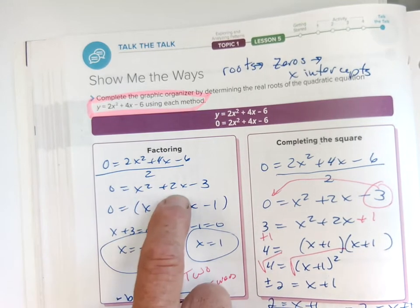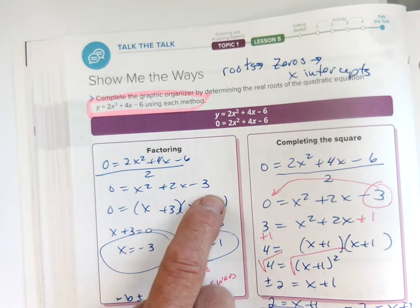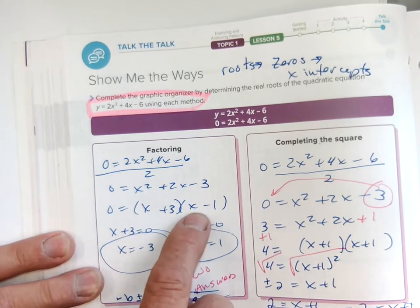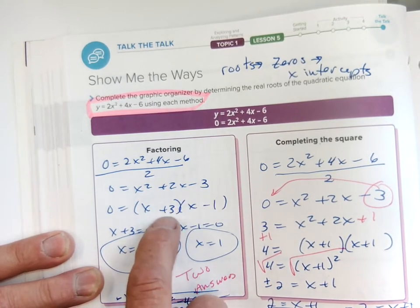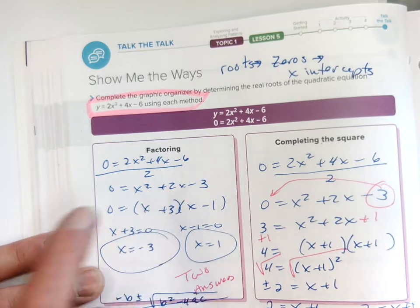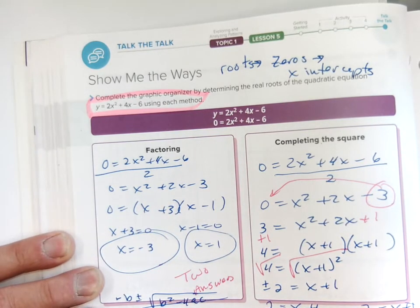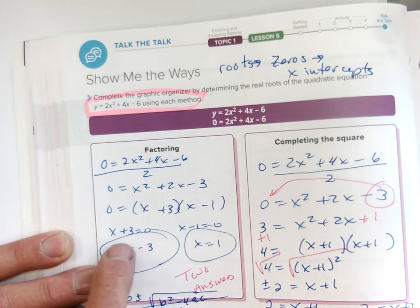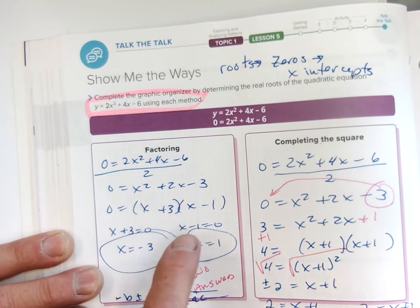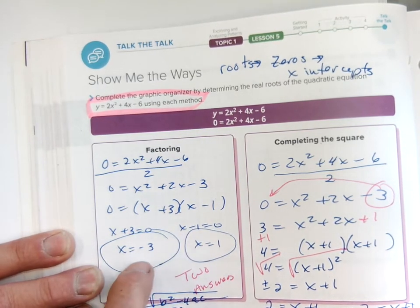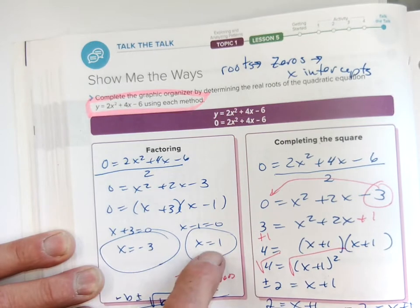From there, I can factor: x times x, and multiples of negative three are three and negative one, which make a positive two for the middle term. I get (x + 3)(x - 1) = 0. I solve my mini equations: x + 3 = 0 and x - 1 = 0, getting roots of x = -3 and x = 1.